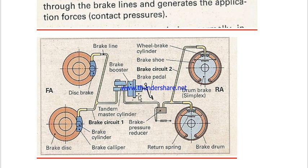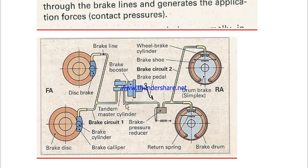We are going to explain this sketch to help you understand very well. Here we have a brake pedal — that is the first component of the braking system. Here we have a brake booster, and then a master cylinder, then brake lines. Here we have a disc brake at the front wheel, and at the rear wheel there is a drum brake. Front wheels use disc brakes. The brake pedal is a pedal that you press with your foot in order to make the vehicle go slowly or stop.